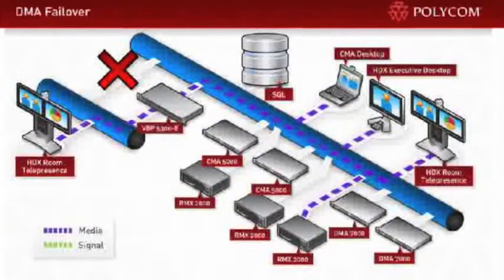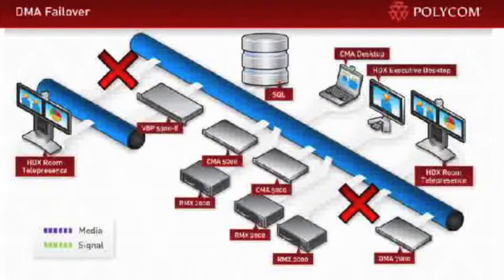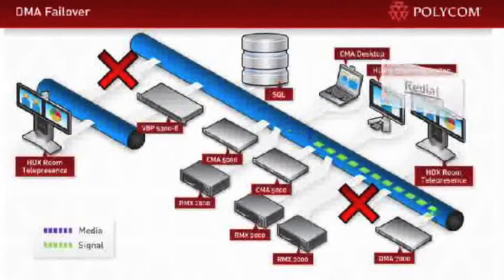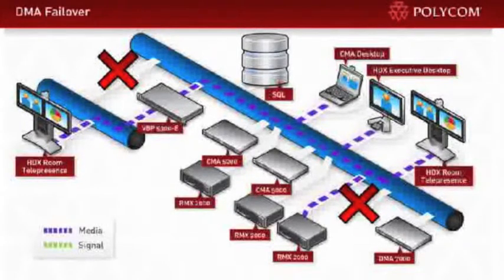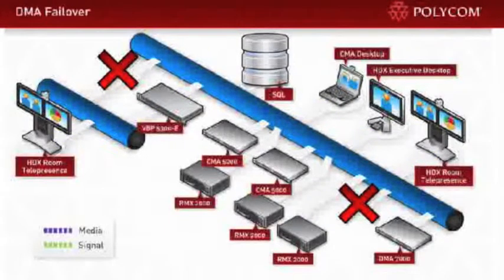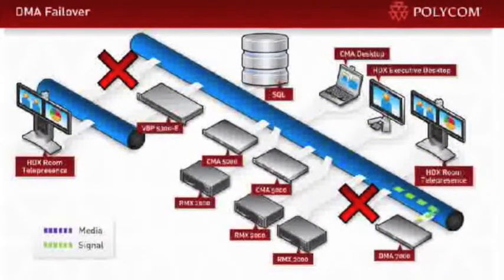Now let's see what happens if we have another outage, this time within one of our bridge virtualization systems — the DMA — that manages routing and resource allocation for our RMX conference bridges. If the DMA goes offline, active calls are either redialed automatically to reconnect users, or users can simply redial the same number and be placed on the most appropriate MCU. Because the Polycom UC Intelligent Core leverages virtual meeting rooms and virtual IP addresses, calls are simply directed to the next available DMA. When the DMA went offline, the endpoints lost their signaling path and the call dropped. But then the redundant DMA took over, and those dropped calls went back to their home screen, so the users can simply dial right back in and stay connected.